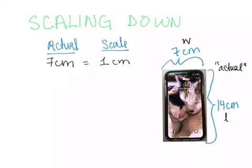Therefore, I would redraw my iPhone to show, well, every 7 centimeters in actual is 1 centimeter in scale, so that means my width is now only 1 centimeter. And I have 14 centimeters actual, so my scale would be 2 centimeters.